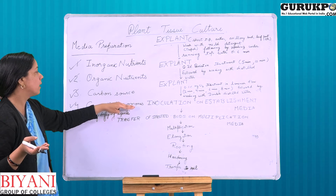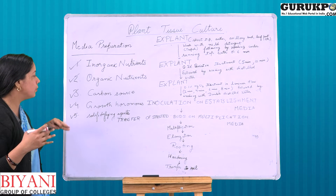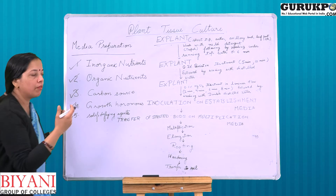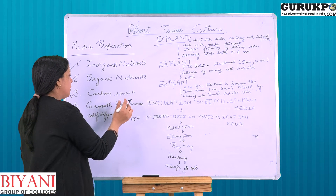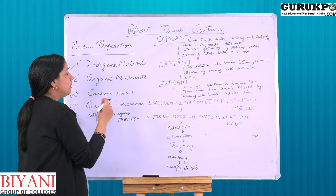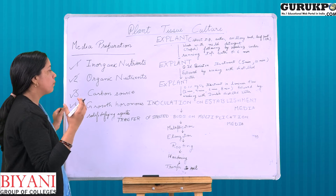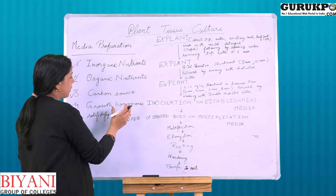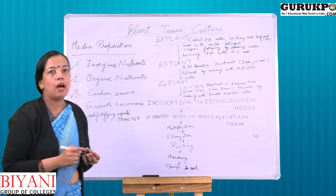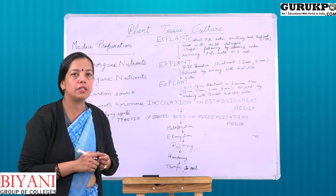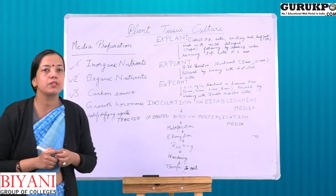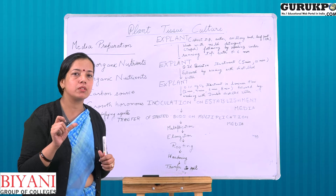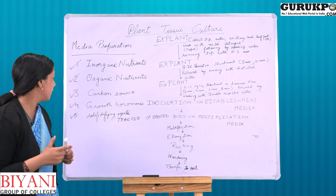Growth hormones are used for inducing growth in the particular cells from which we want to develop the whole plant. Growth hormone concentration gives rise to rooting and shooting in the plant part. Generally, high auxin concentration and low cytokinin concentration give rise to rooting, and high cytokinin concentration and low auxin concentration give rise to shooting.